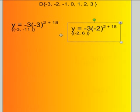Next, the next number is -2. y = -3(-2)² + 18. -2 squared is 4. -3 times 4 is -12. -12 + 18 = 6. You'd write this problem as (-2, 6).